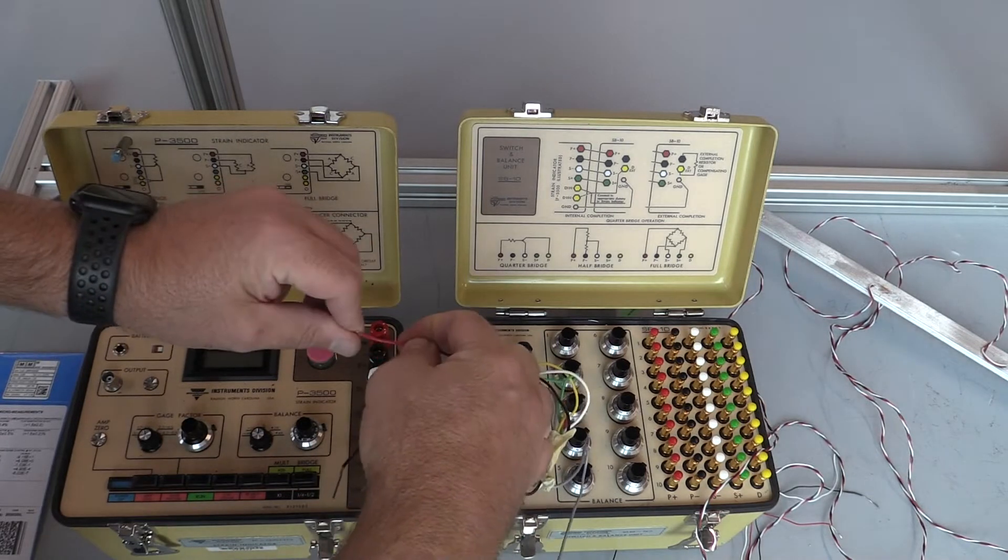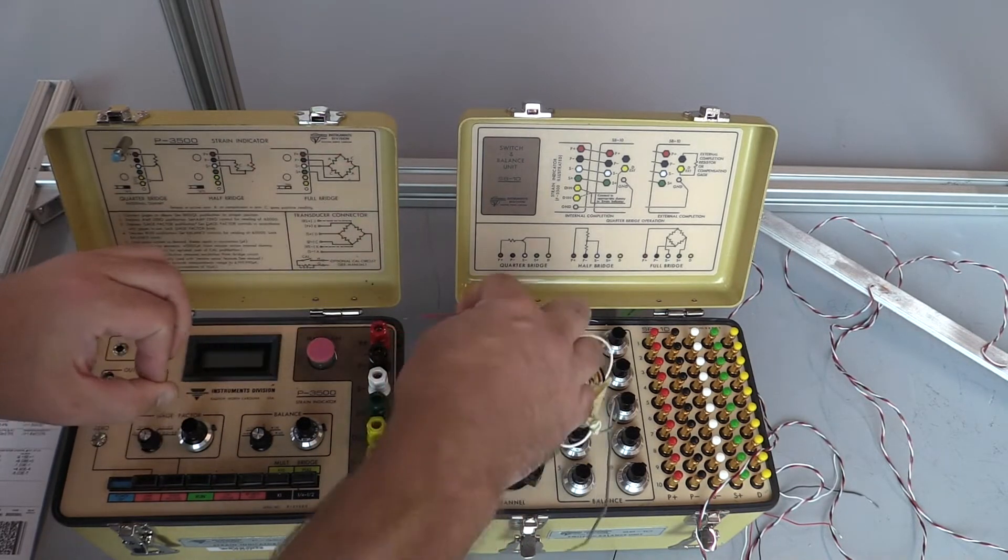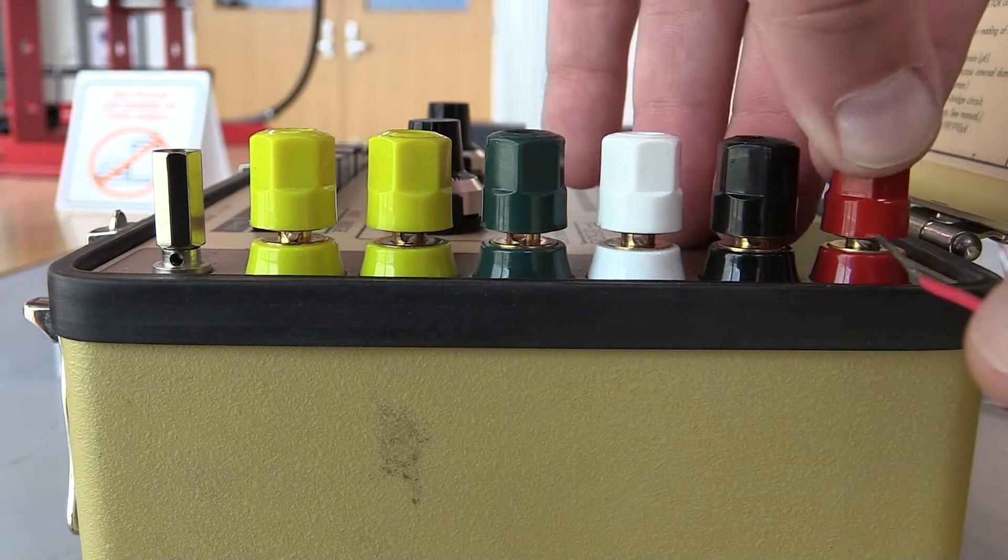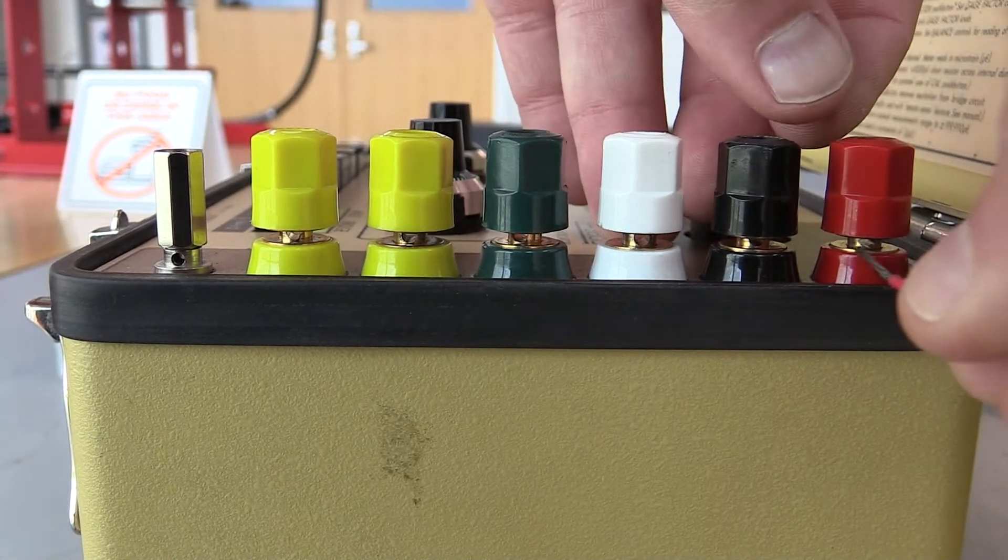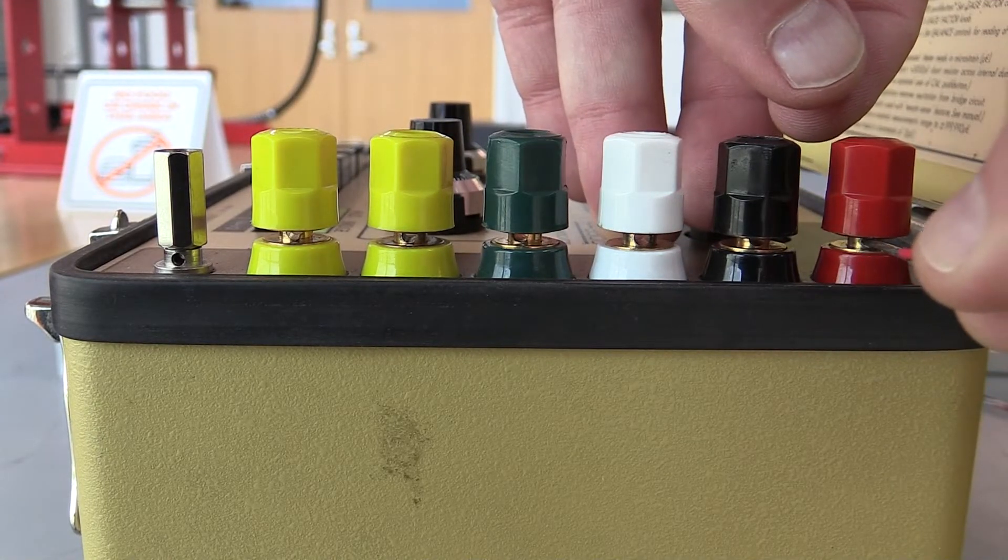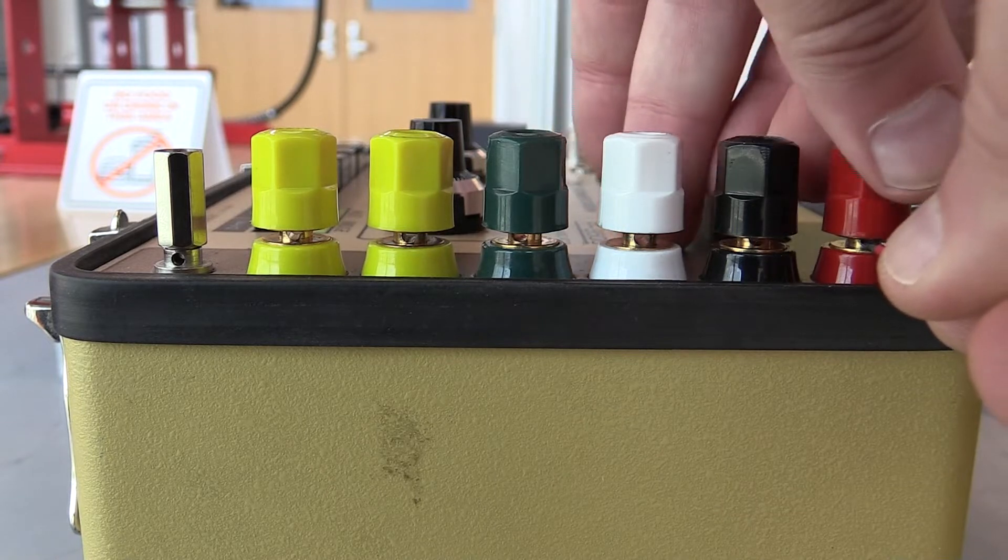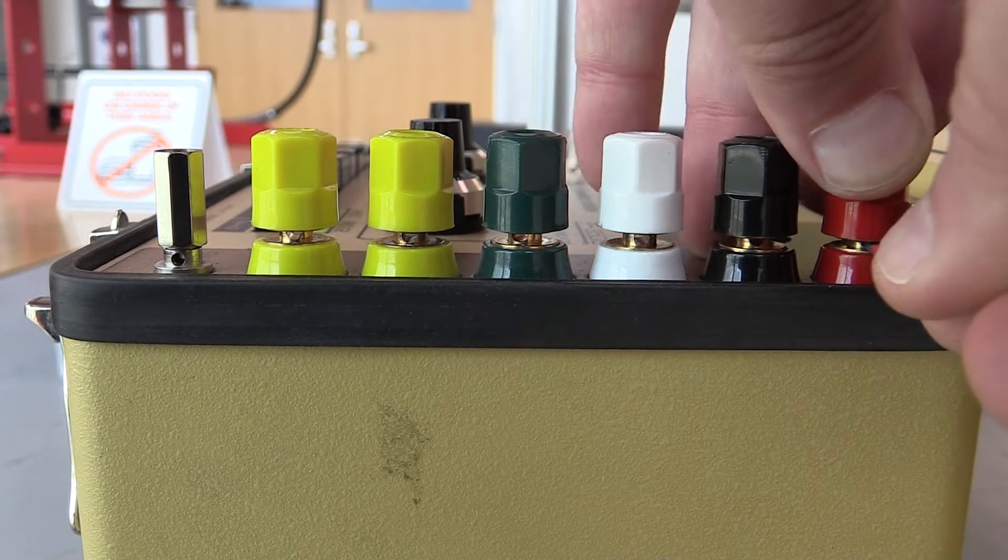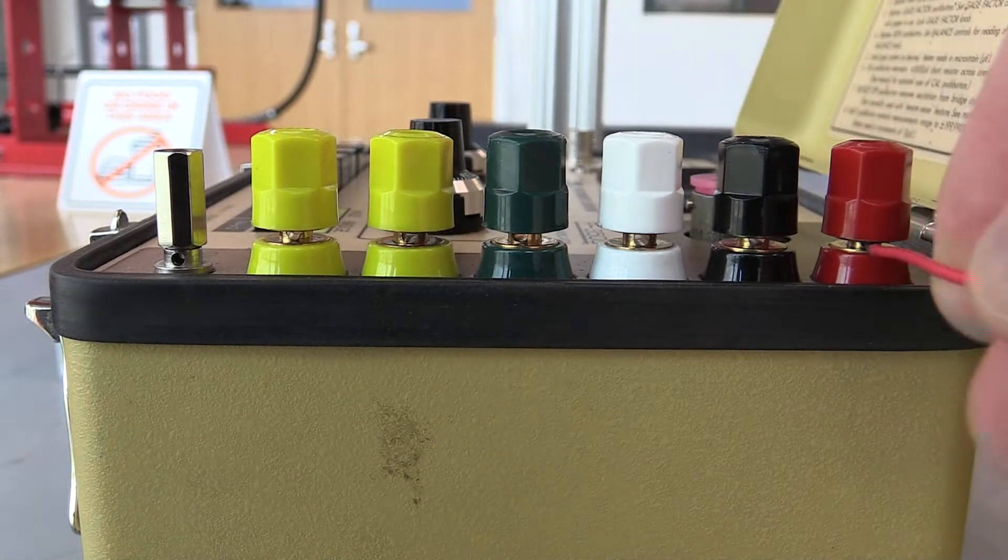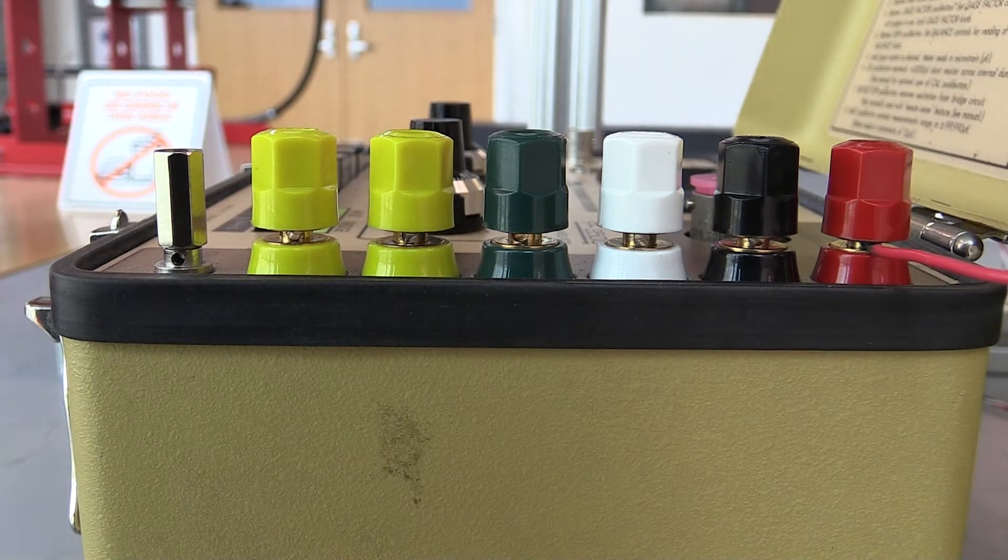And what you want to do is make sure that you're clamping onto the exposed wire portion. You're going to back this off. There should be a hole in that post. And what you're going to be able to do is feed that wire in there and then screw that down on there and check to make sure the wire is attached properly. Let's go ahead and hook the rest of these up.